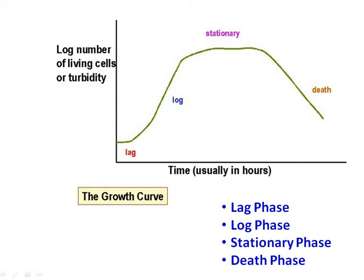We will consider what happens when growth is measured after inoculation of a small number of a suitable microorganism into a sterile medium contained in a vessel of definite volume. A typical growth curve is observed here. This growth curve has four different phases.